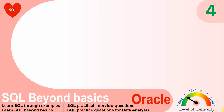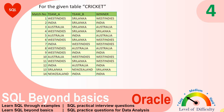Hello friends, welcome to the SQL practical question series. Here is a table that contains information about cricket teams who played in one particular tournament. The table contains information about which team played as Team A against which team in Team B, and in the third column who is the winner. There is information about 14 matches where many countries played against different countries with a winner recorded.